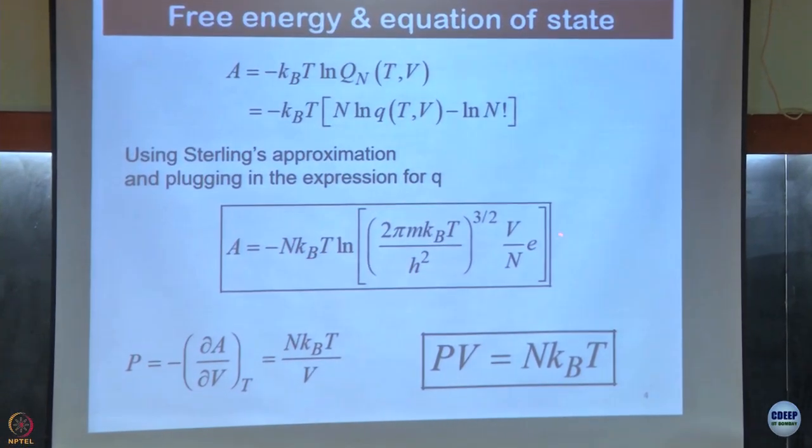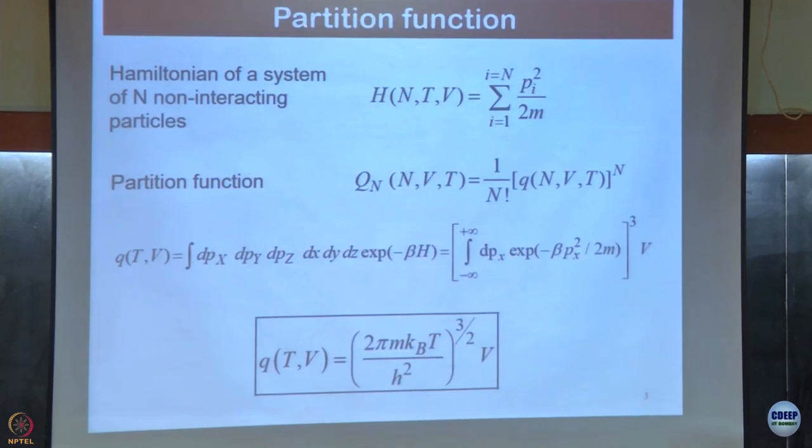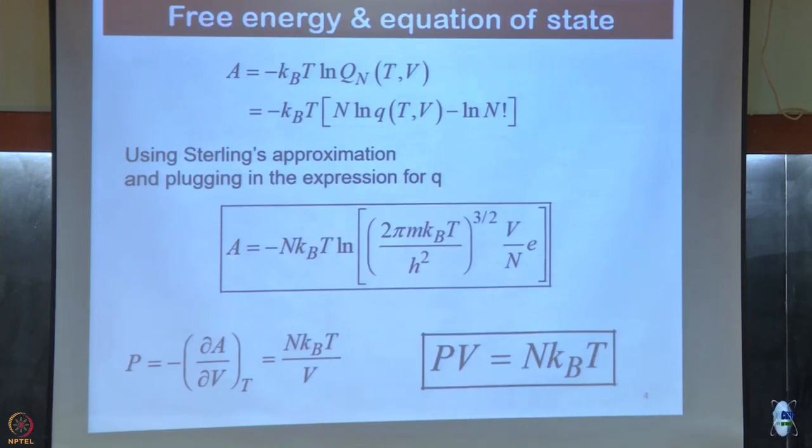So if this is the free energy which is following from this, from there we get, we do this, this is a little unstable. From this, then we get this, then we take the derivative. The pressure minus dA/dV at constant T from thermodynamics, then we get.